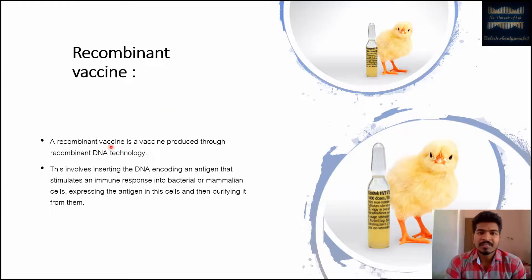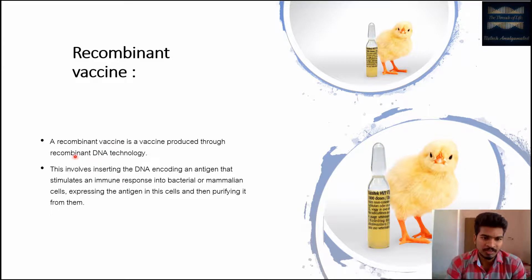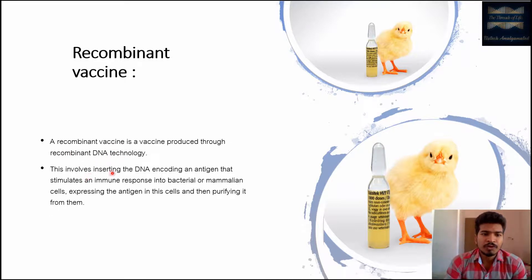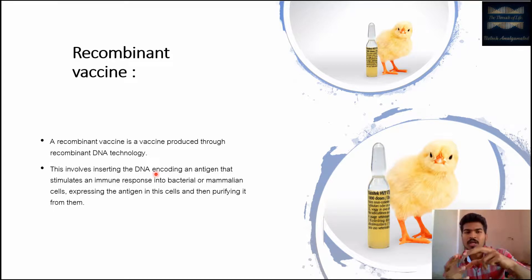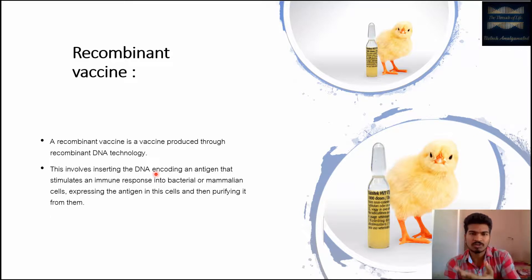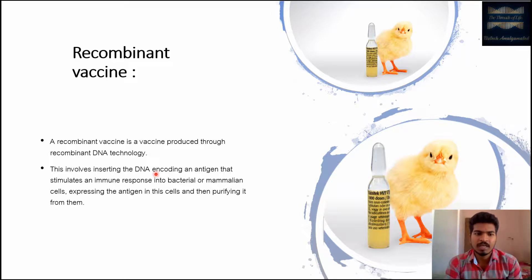A recombinant vaccine is a vaccine produced through the use of recombinant DNA technology. This technology involves the insertion of a DNA segment that encodes an antigen into another bacterial or mammalian host cell, so that the DNA segment will express the protein in the host cell. Those expressed proteins are then purified and used as a vaccine.